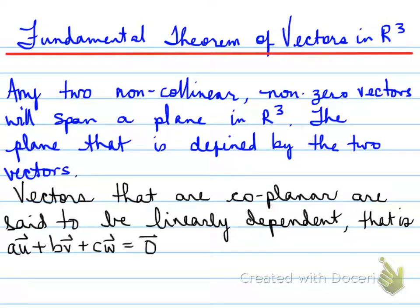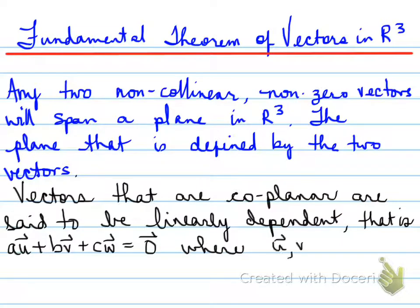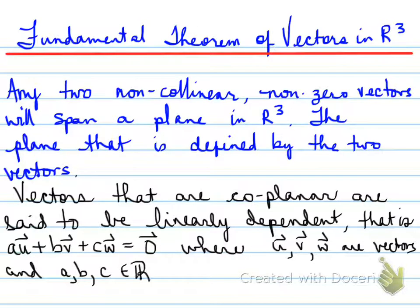That is, when you take any three vectors and add them together, the result will be the zero vector. Or you take any two vectors and it equals the third vector — that also means they are linearly dependent. So where U, V, and W are vectors, and A, B, and C are real numbers that don't equal zero.